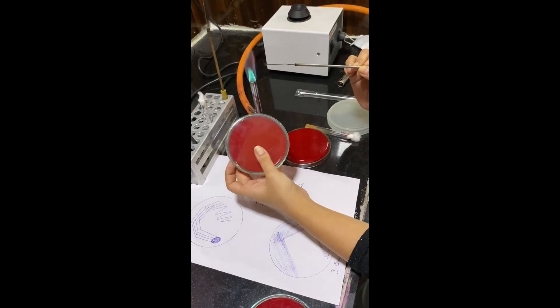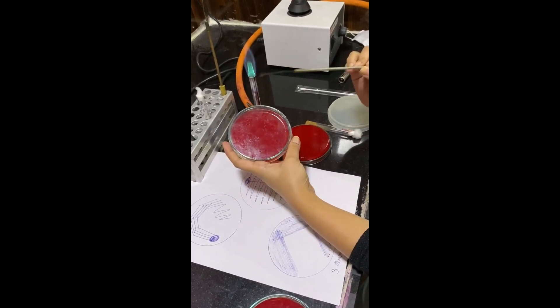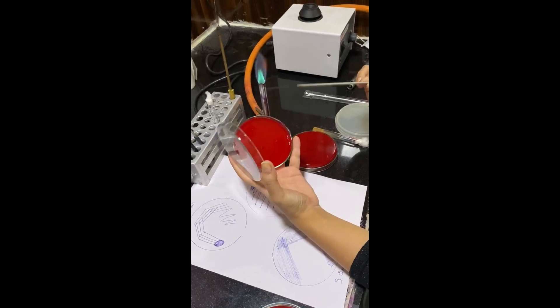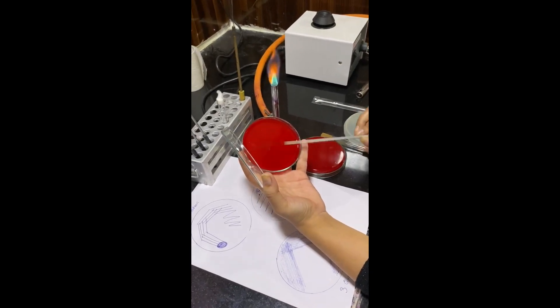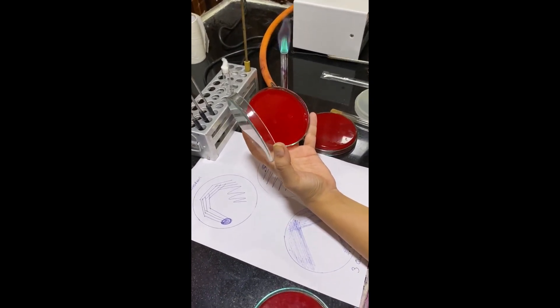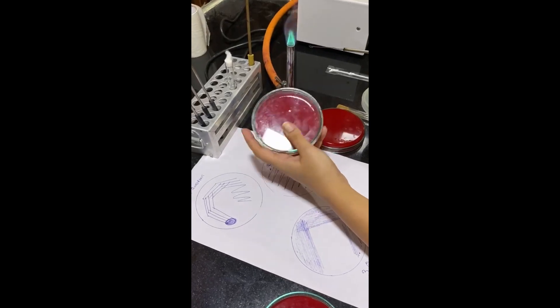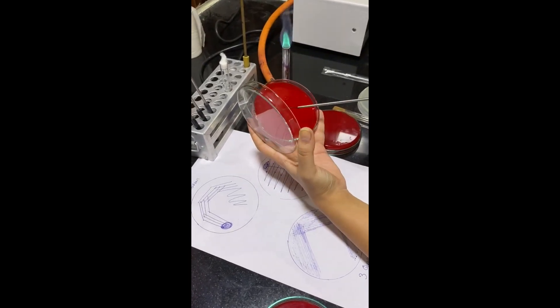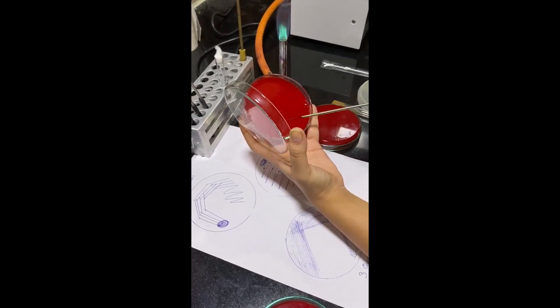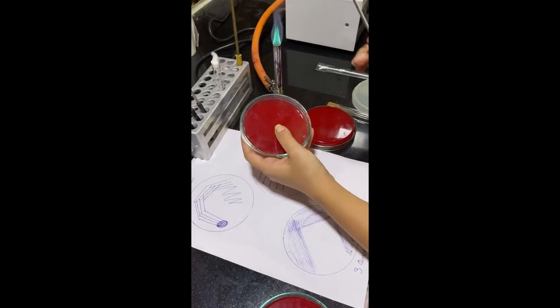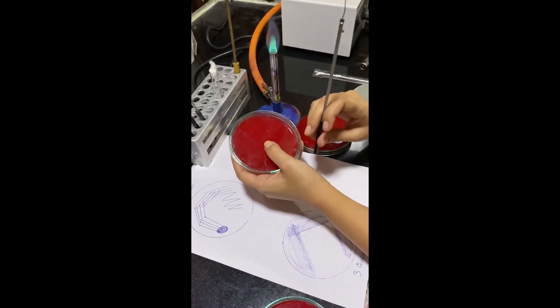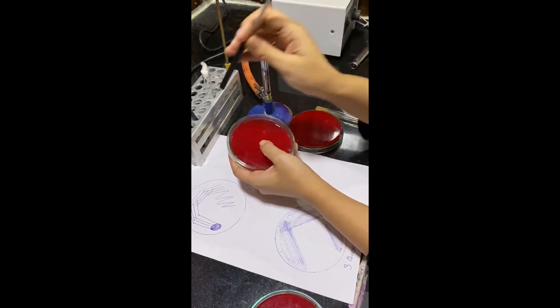The bacterial suspension. Close the lid. Tilt it. And from the end of the primary quadrant, do such kind of a streak. Close it. Tilt it. Again in this method, you can either sterilize the loop each time or use a new one.